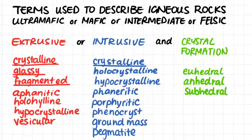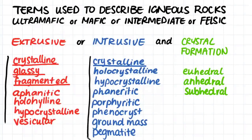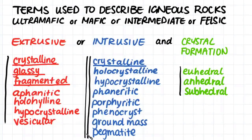After we've defined the rock as intrusive or extrusive, we can then use all of these terms to describe the rock even further. These terms are all used to describe specific features of igneous rocks. And then finally we have the terms euhedral, anhedral, and subhedral, which are used to describe the crystal formation we can see within igneous rocks. In this video we will focus on the intrusive terms and the terms used to describe crystal formation.